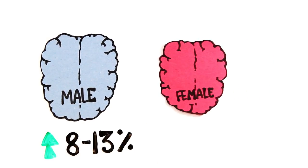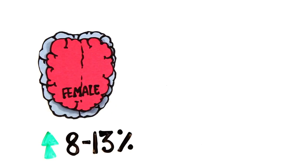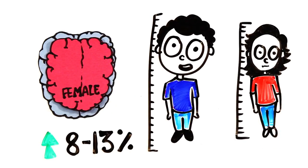Early studies showed that male brains are 8-13% larger in volume than female brains. However, this has since been attributed to differences in body size.